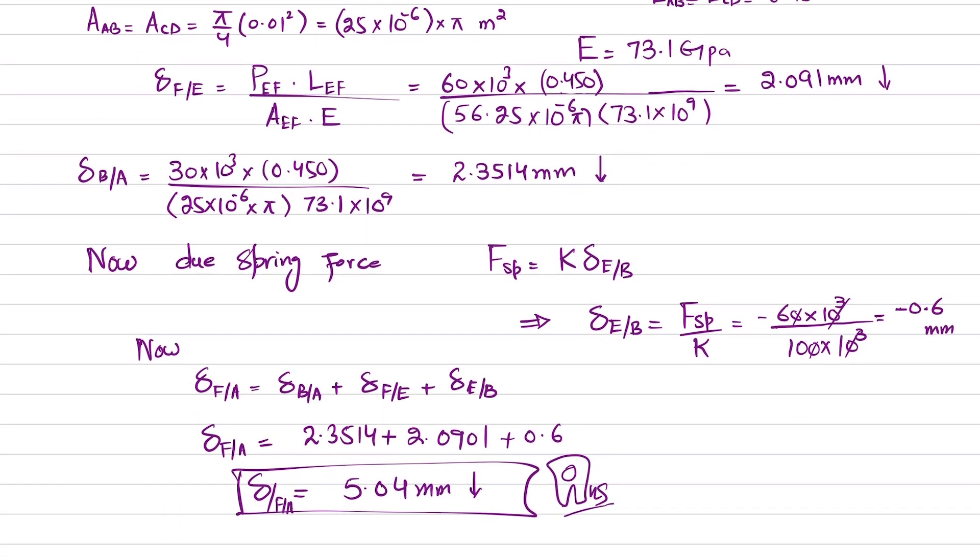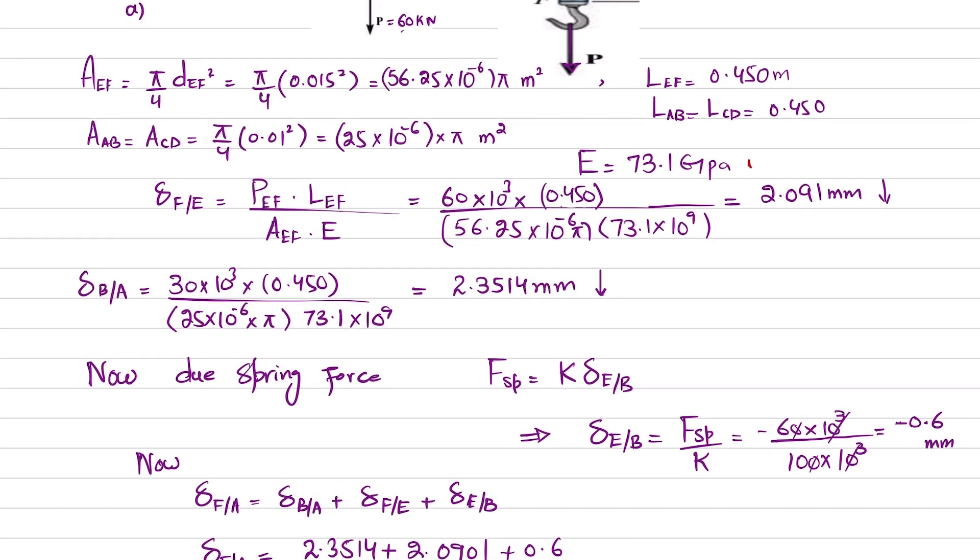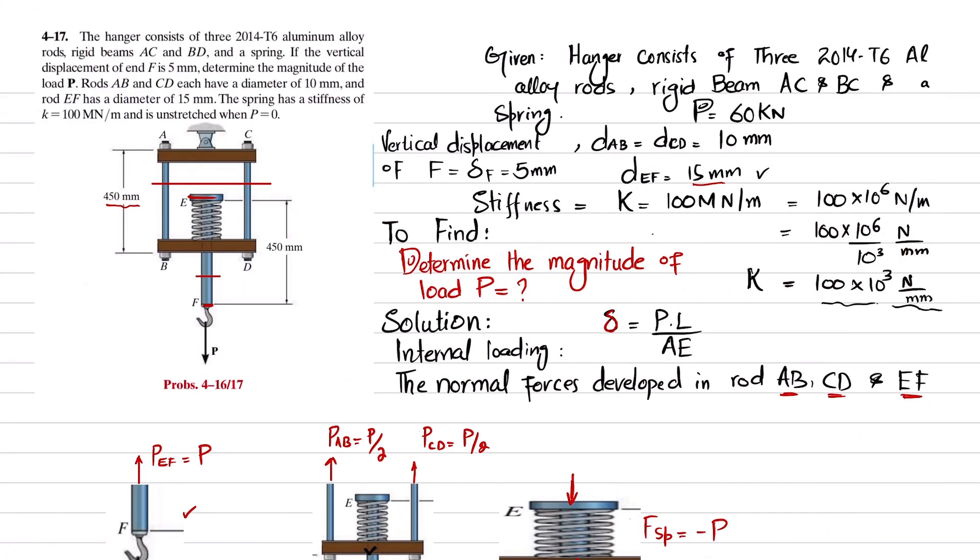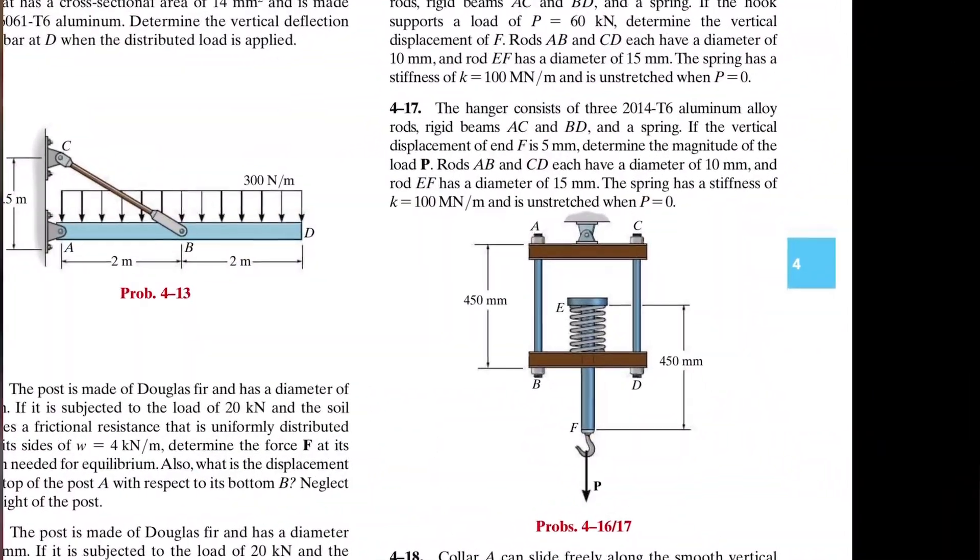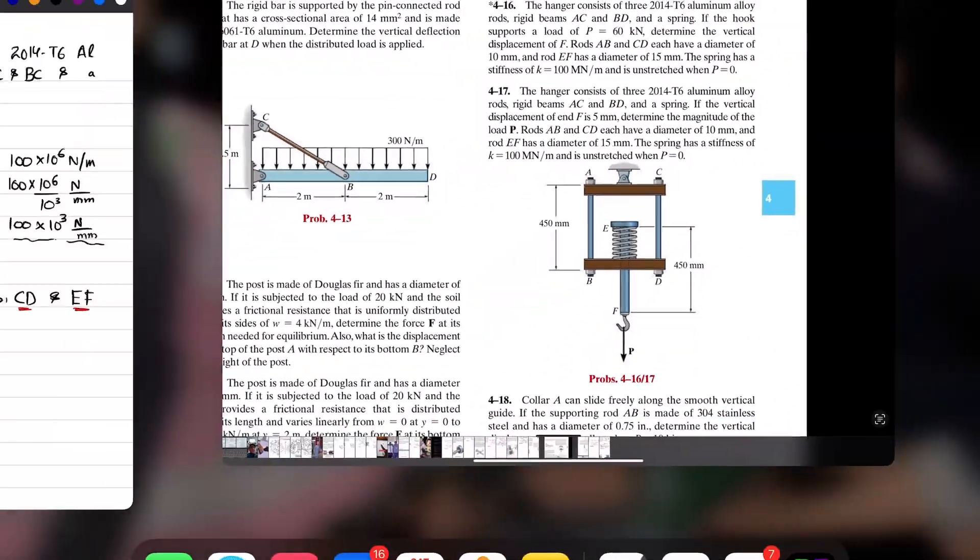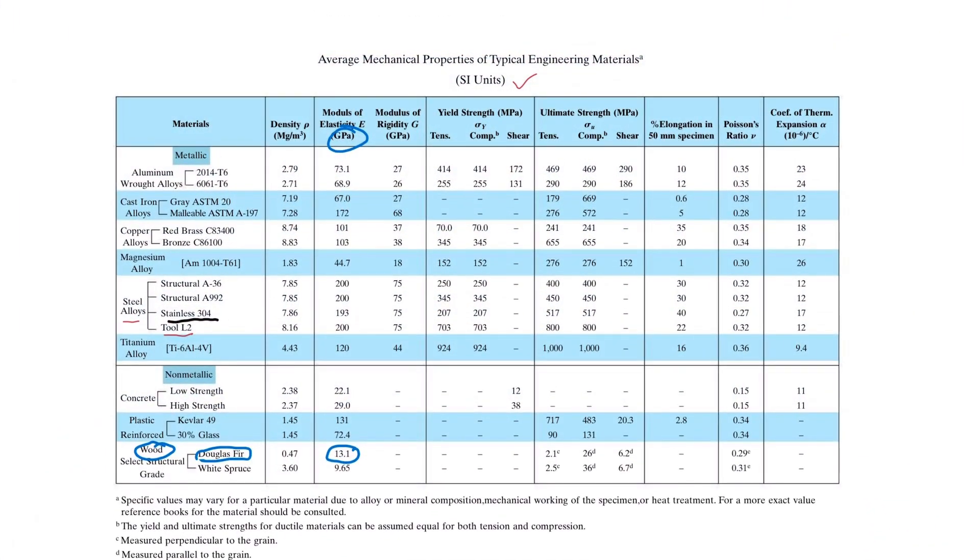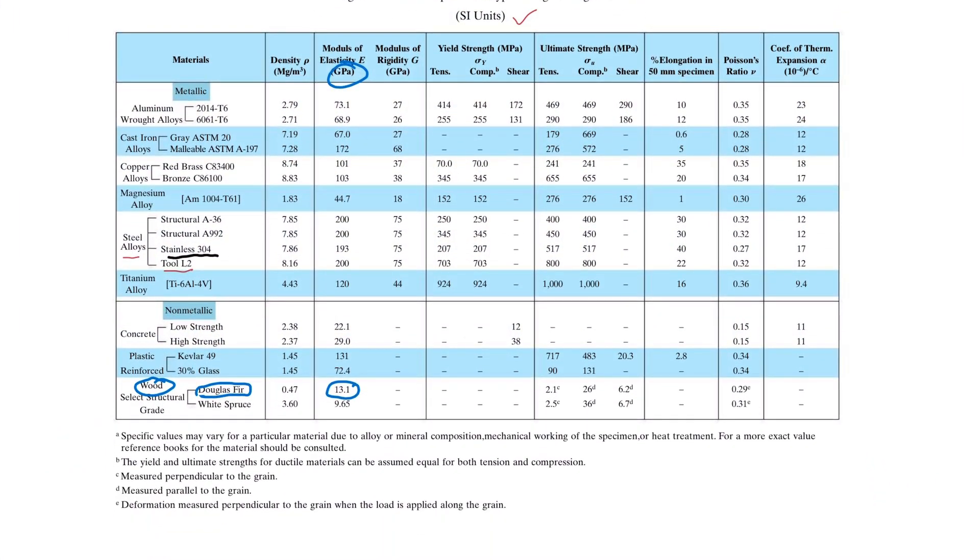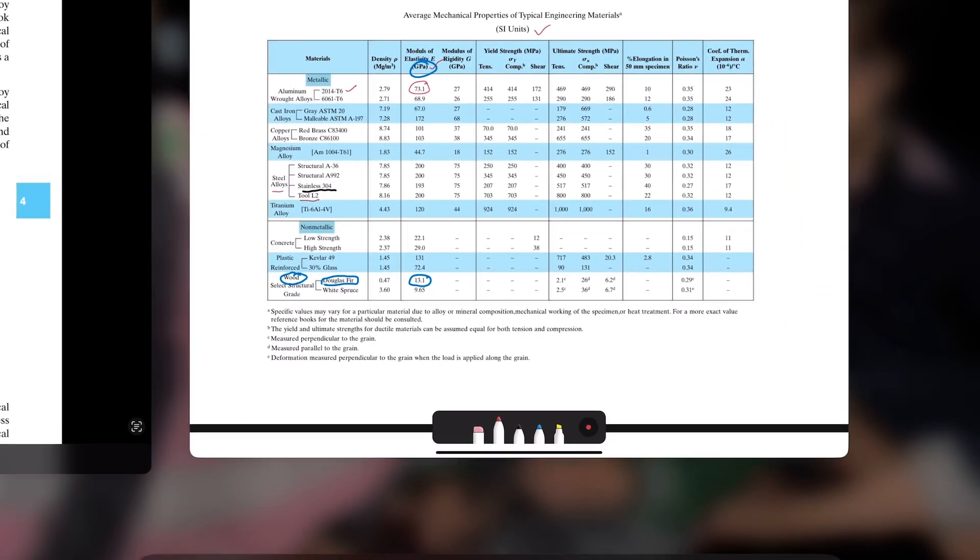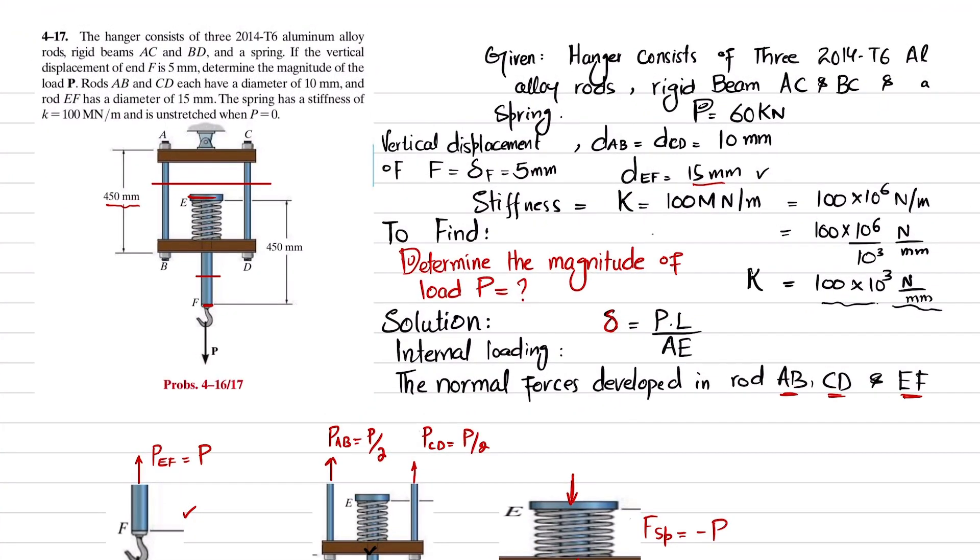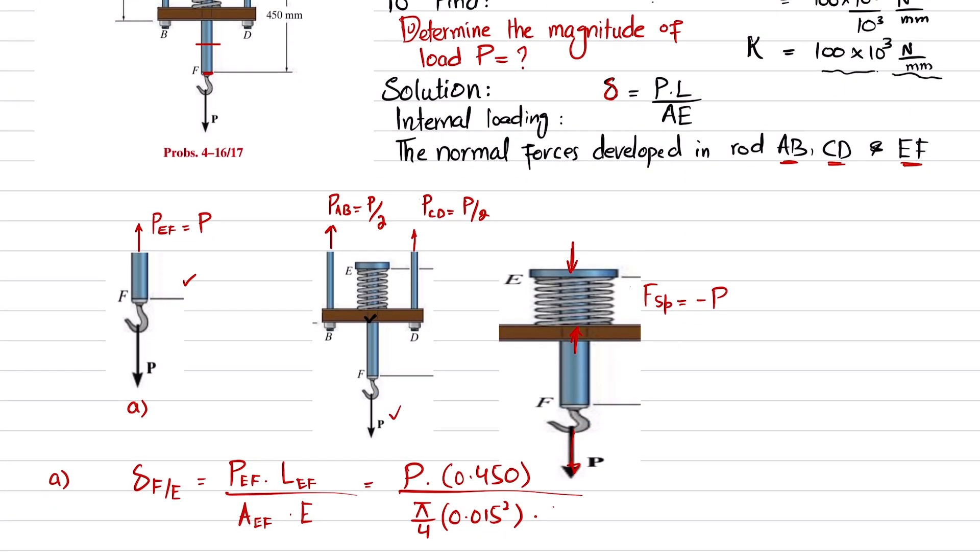What about E? E for 2014-T6 aluminum is 73.1 gigapascals. If you go to the end of this book, you can see the value is 73.1 gigapascals.